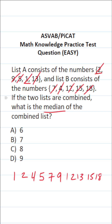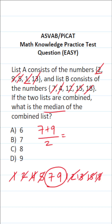Now to find the median or the middle of this list, we're going to start crossing out numbers at each end until we get to the middle number or middle two numbers. If you get to one number in the middle, that's your median. If you have two numbers in the middle, you find the average of those two. In this case, we have two numbers in the middle, so we do 7 plus 9 divided by 2. 7 plus 9 is 16, divided by 2 is 8. So the median of the combined list is 8.